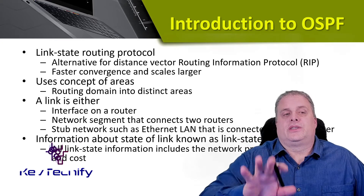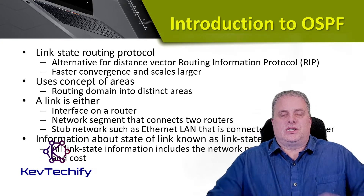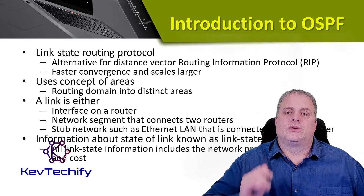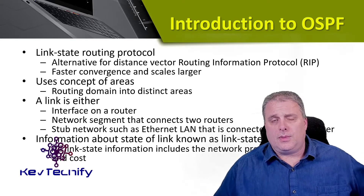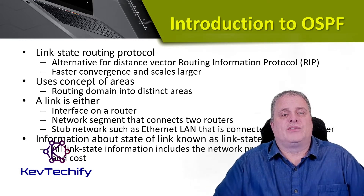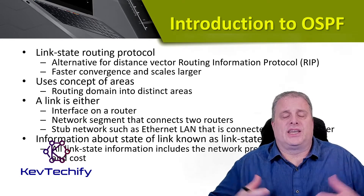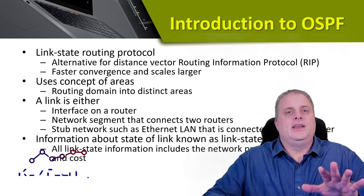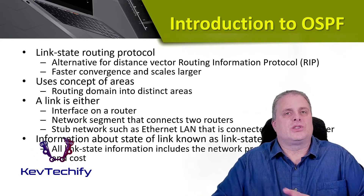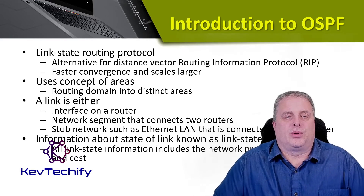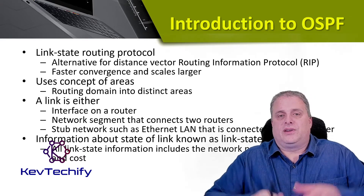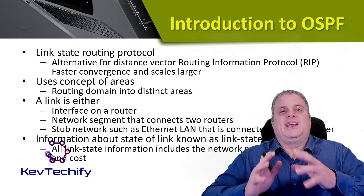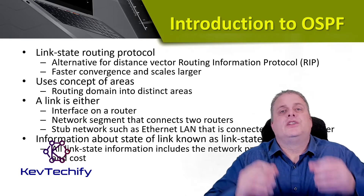A link state protocol is the alternative to a distance vector protocol. Distance vector is typically older technology — the one we talk about most is RIP, routing information protocol. There were some limitations with that, but OSPF doesn't have those limitations. OSPF is faster converging and scales larger. Faster converging means when there's a change to the network, all devices know the best routes quicker. You can run OSPF with a couple of routers, and it scales up to hundreds of networks, or even larger with multi-area OSPF.